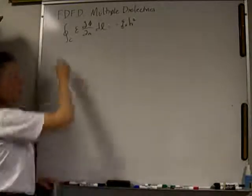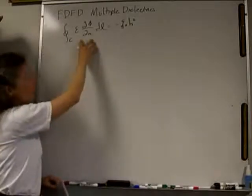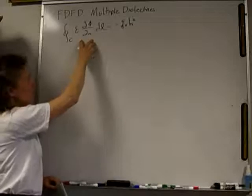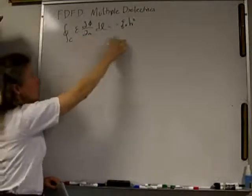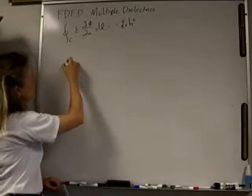Now let's look and see how to take this integral equation and convert it to FDFD form. Right here we have the change in potential across the boundary in a normal fashion is equal to minus QV times H squared. So let's see what to do with that.